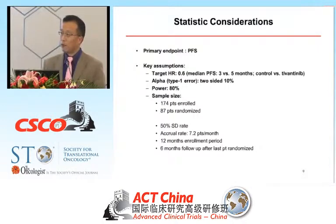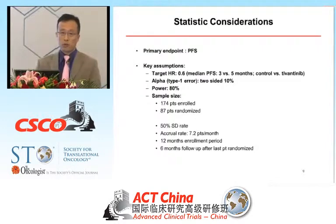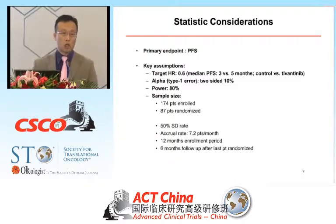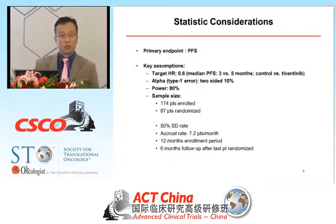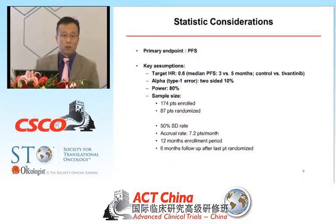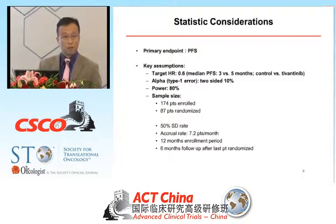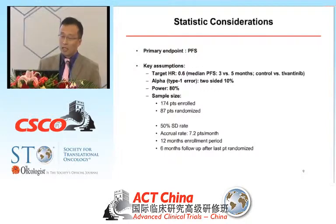With help from Jack, we were able to provide some numbers. The team assumed a target hazard ratio of 0.6, corresponding to a median PFS of three months for the control arm and five months for the treatment arm. This hazard ratio was chosen based on benchmarking recent examples in metastatic breast cancer, with the most recent being Affinitor — an mTOR inhibitor in hormone-receptor-positive metastatic breast cancer in the second-line setting. We believe 0.6 is a reasonable threshold for clinical relevance. We assumed a two-sided alpha of 10% with 80% power, and Jack very quickly calculated the sample size.